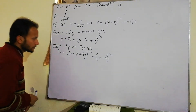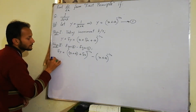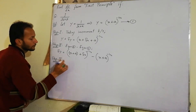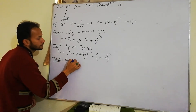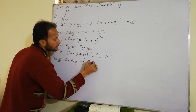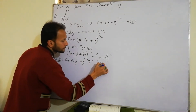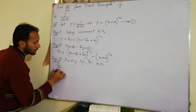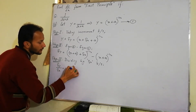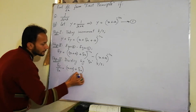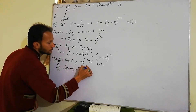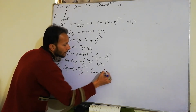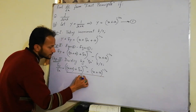Step 3: dividing by Δx on both sides. Dono taraf Δx se divide karte hain. Toh Δy/Δx = [(x + Δx + a)^(-1/2) - (x + a)^(-1/2)] / Δx.